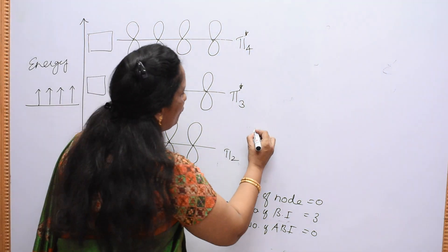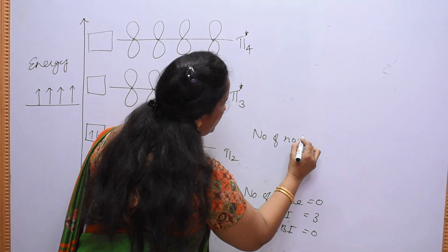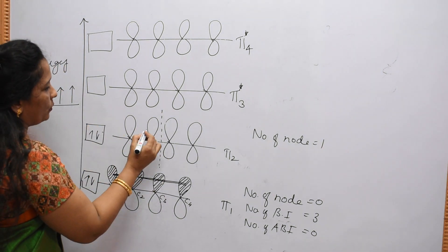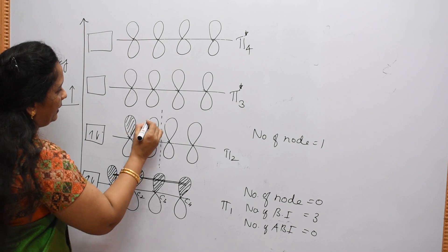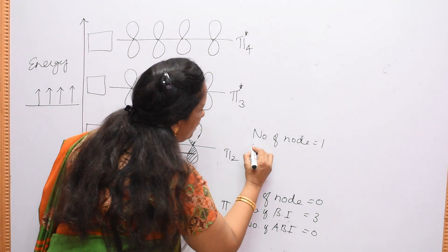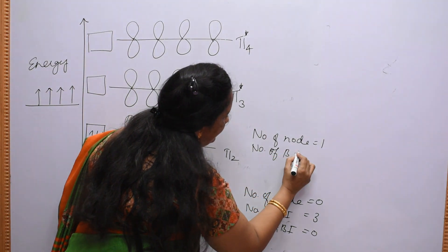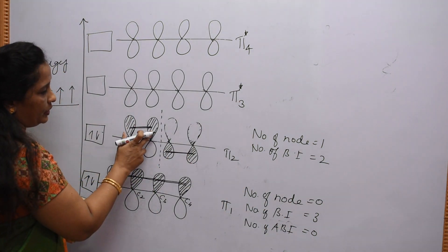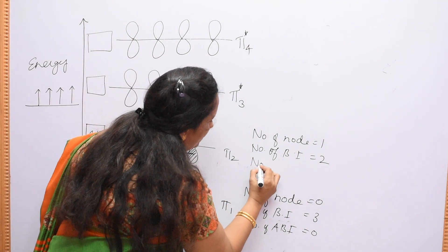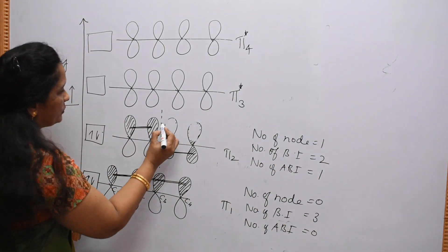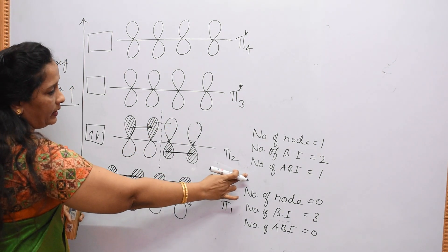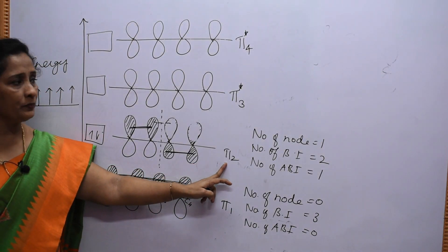Coming to pi 2, the number of nodes is equal to 1. With this node, the bonding interactions happen between C1 and C2 and between C3 and C4 — lobes of the same sign — giving 2 bonding interactions. The number of anti-bonding interactions is equal to 1, occurring between lobes of opposite sign between C2 and C3.